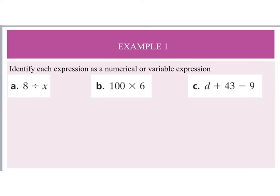When we look at example one, we have to identify each expression as numerical or variable. Part a says eight divided by x — I have both numbers and a variable with an operator, so this is a variable expression. Part b is one hundred times six — there are only numbers involved, so this is a numerical expression.